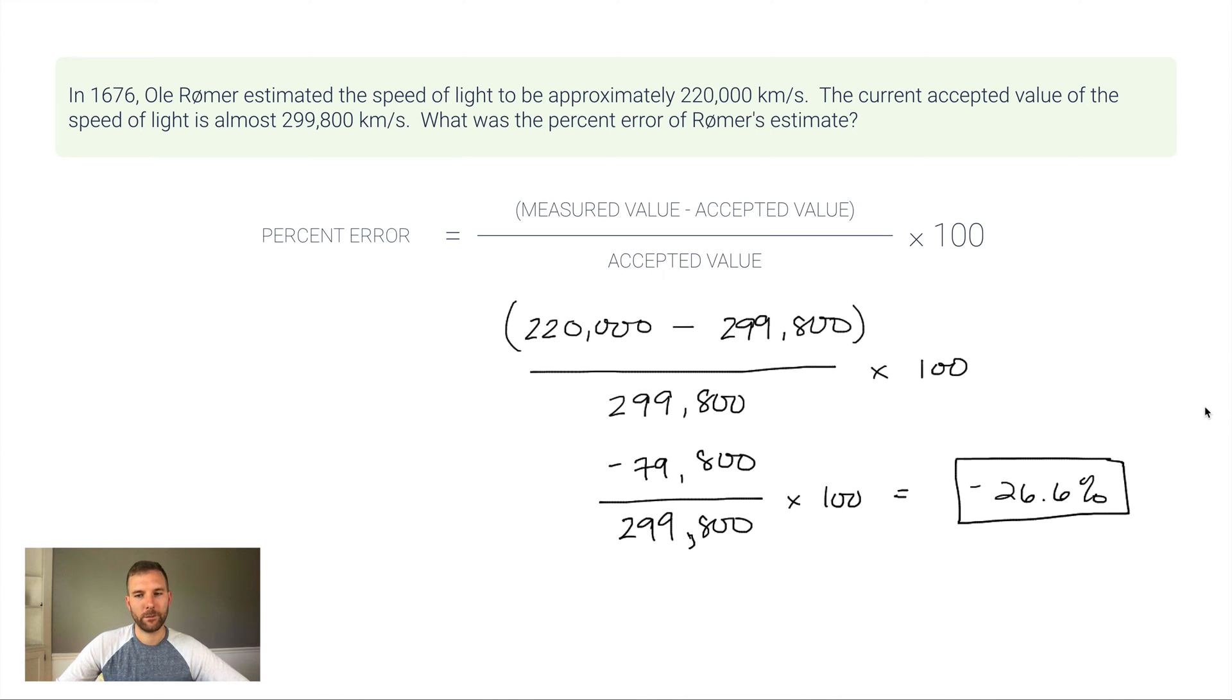Negative percent error just means the measured value is smaller than the accepted value, or it's underneath what you should have gotten. It's probably better that you look at the magnitude—the number in the percent error—than care so much about plus or minus. In our last problem, we had 3% error, which was much better than negative 26.6% error.